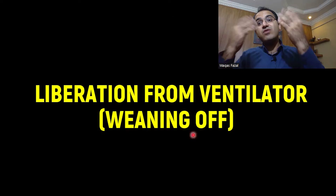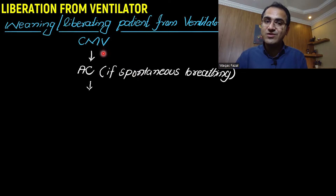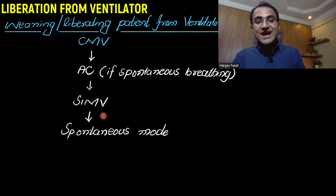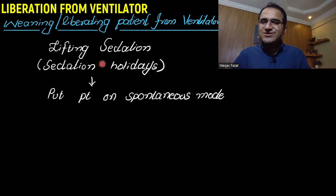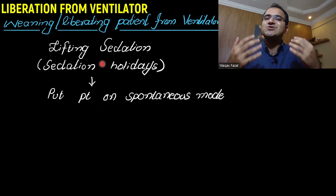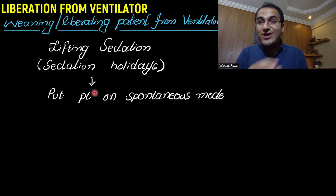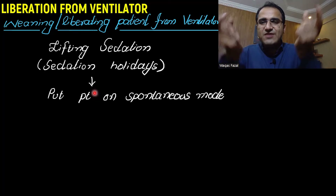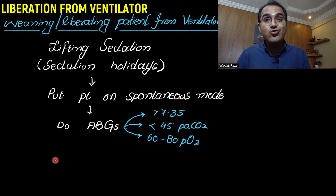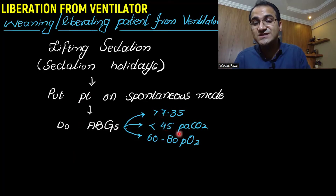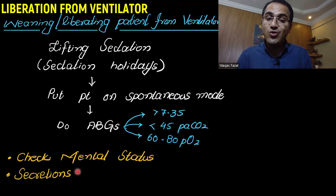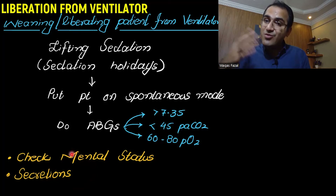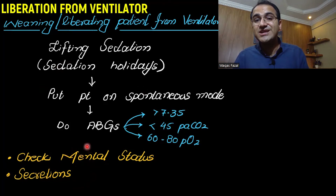For liberation from the ventilator, patients typically progress: CMV → assist control → SIMV → spontaneous mode. Sedation is gradually lifted. You give the patient a trial to see if they can breathe independently. You check ABGs regularly: pH greater than 7.35, PCO2 less than 45, PO2 between 60 and 80 indicates the patient is doing well. You also check mental status and secretions before taking the patient off the ventilator.